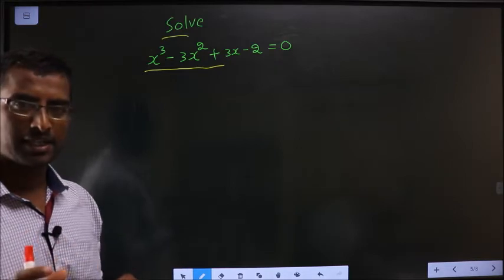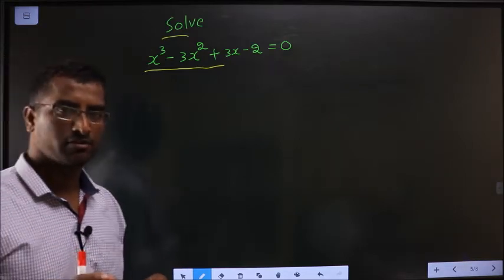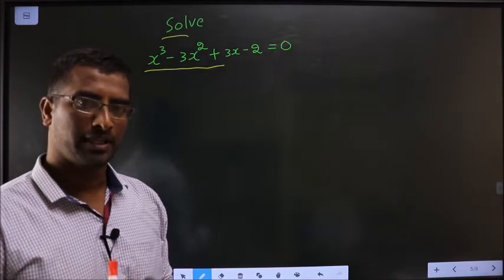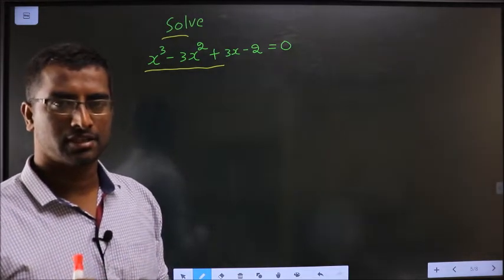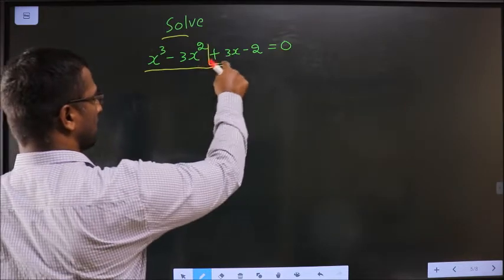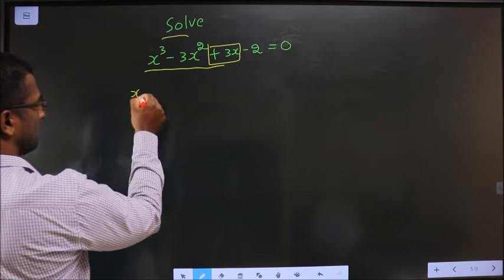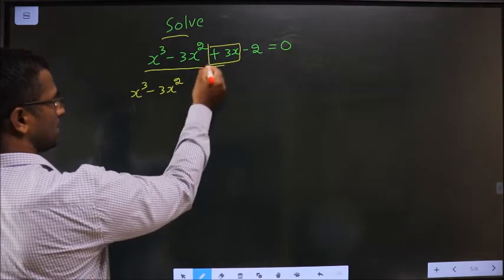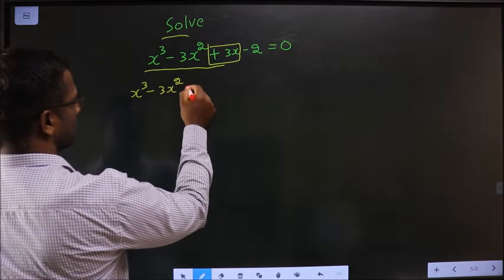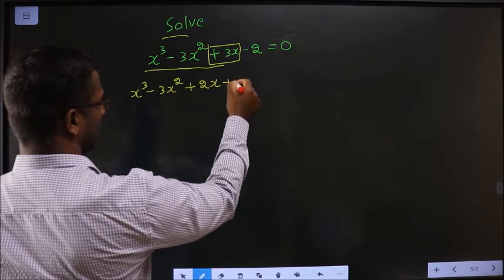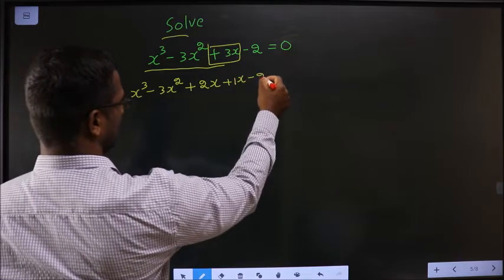See, remember even in quadratic equation we used to change the x term. Here also we should change the x term only. Here the x term is plus 3x. How do I change it? See, instead of plus 3x, I will be writing plus 2x plus 1x minus 2 equal to 0.